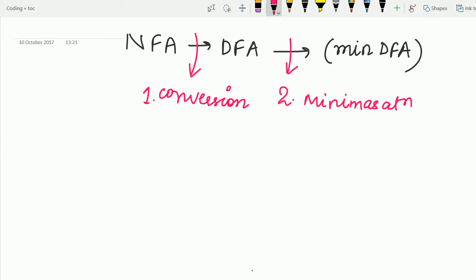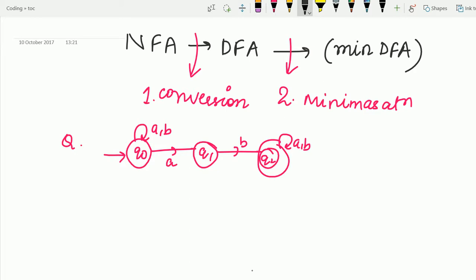So let's get started. First of all, we are given the question that we are going this NFA, which is showing Q0 on AB. And on A transaction, we are going to Q1. And on B, we are going to Q2 and also AB.